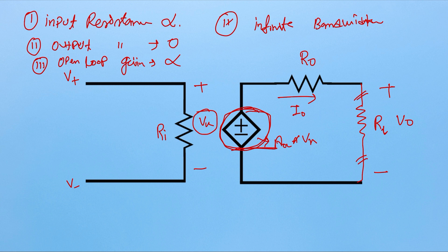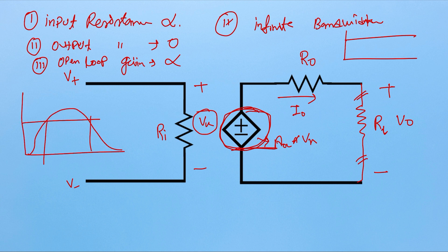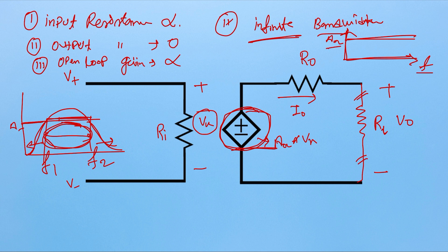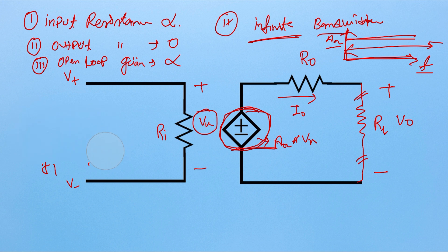The fourth ideal property is infinite bandwidth. That means this amplifier should work for a broad range of frequencies — whatever frequency we use, the gain will be constant. As we know, bandwidth is the range between F1 and F2 where gain is constant; below F1 and above F2, the gain drops. But for an ideal op amp, the bandwidth should be infinite, meaning the frequency response will be a straight line — the op amp should work from low to high frequency.